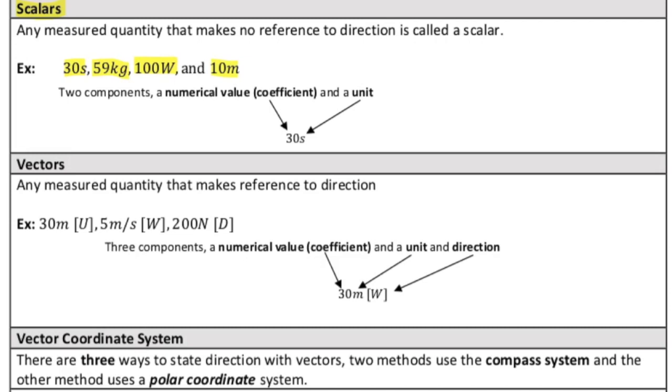There are two components associated with a scalar quantity. We have the numerical value, which I almost always refer to as the numerical coefficient and the unit. When we look, we have 30 seconds. The 30 is the numerical coefficient and the seconds here, that is your unit.